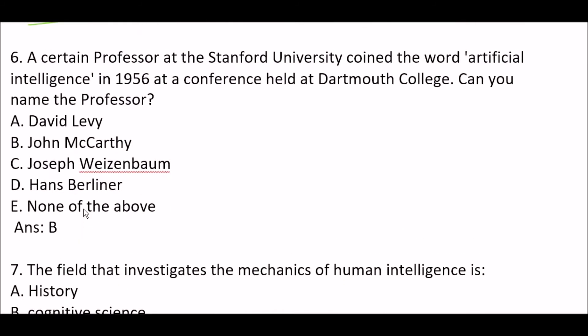Next question: a certain professor at Stanford University coined the word 'artificial intelligence' in 1956. Can you name the professor? Option A: Minsky. Option B: John McCarthy. Option C: Joseph Weizenbaum. Option D: Hans Berliner. The right answer is Option B — John McCarthy.